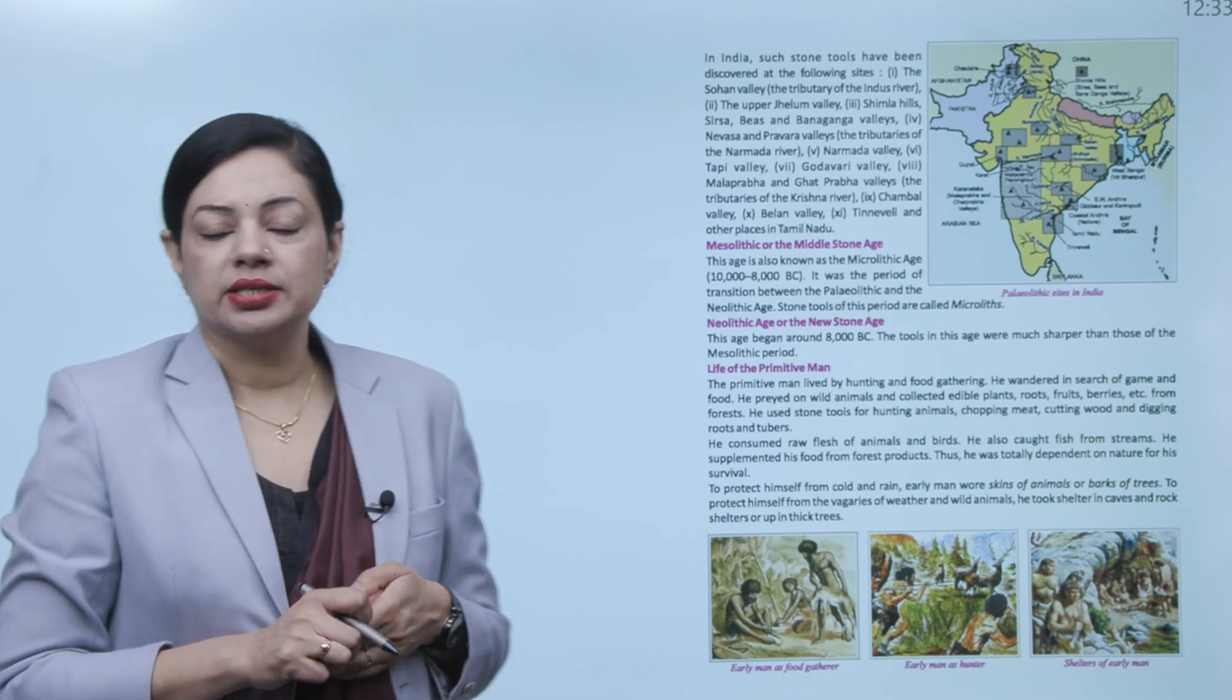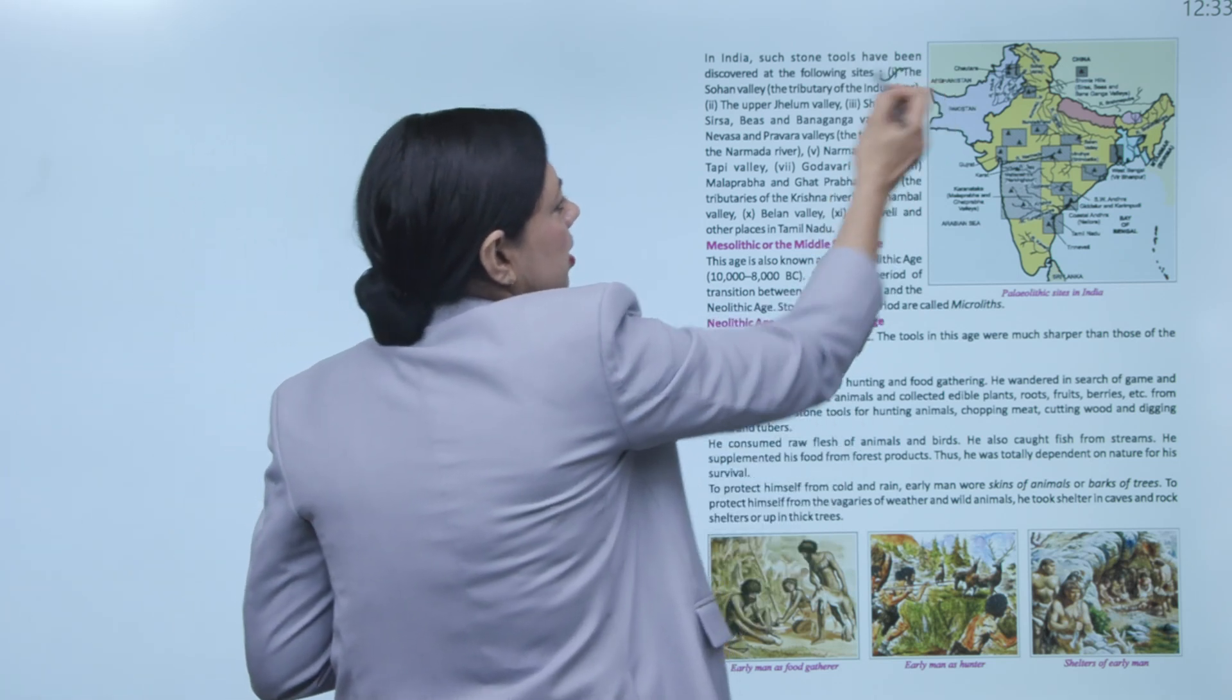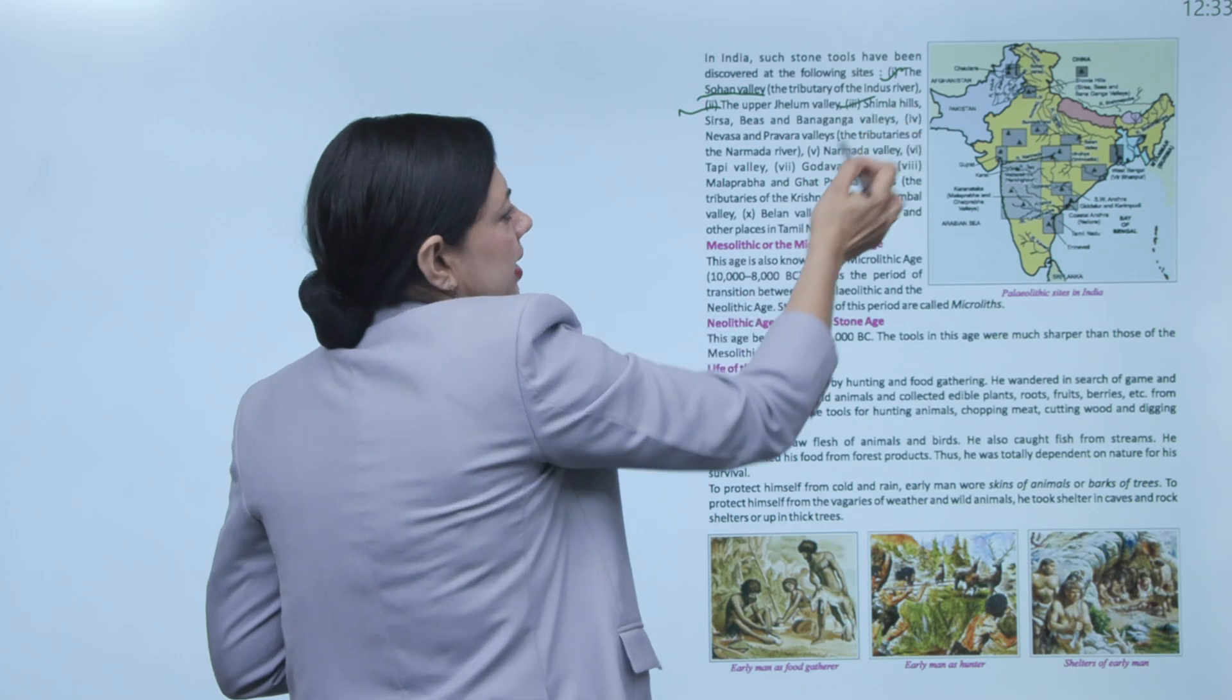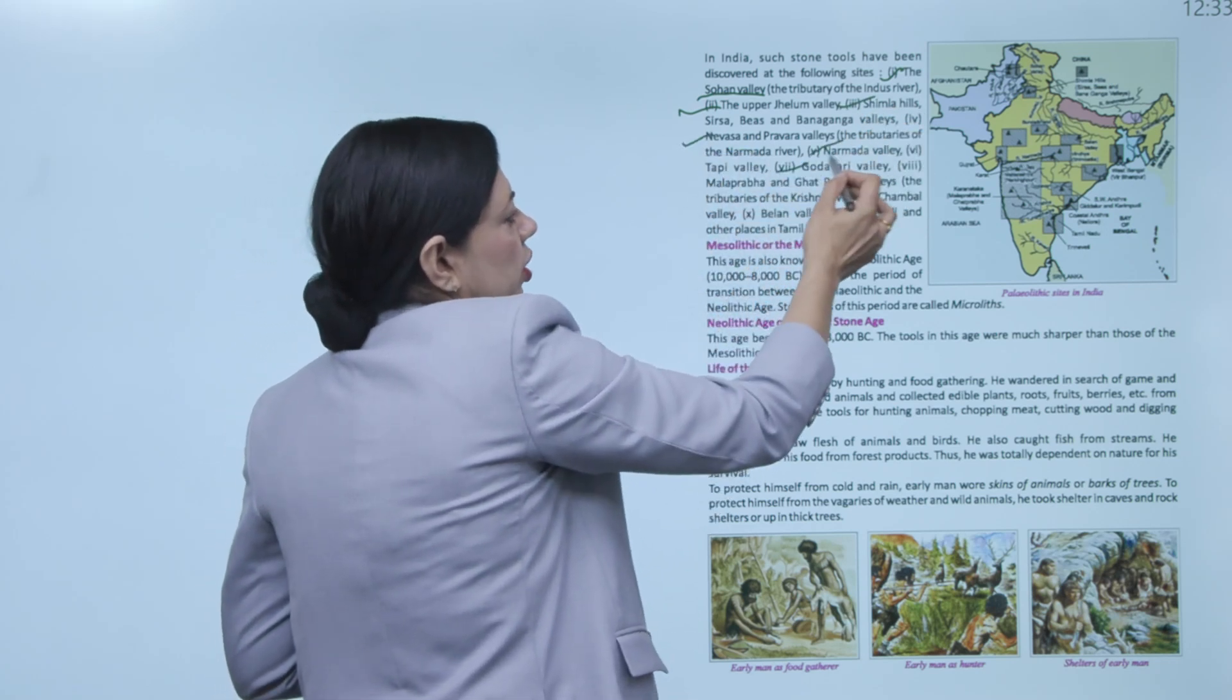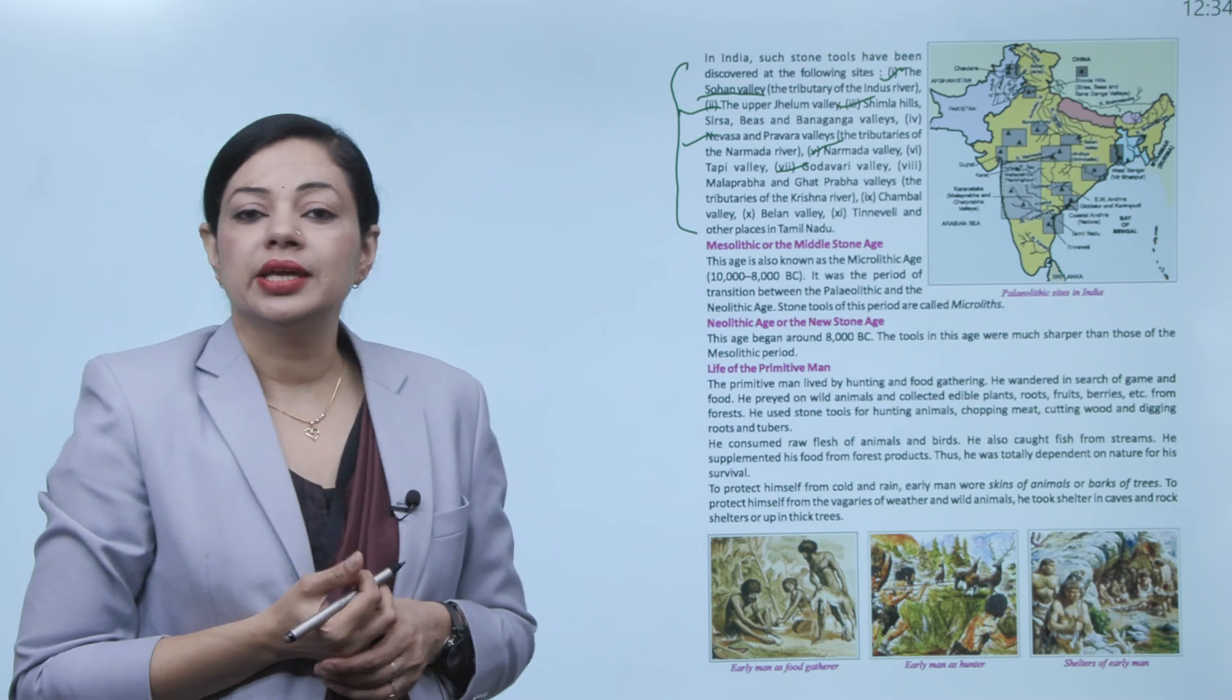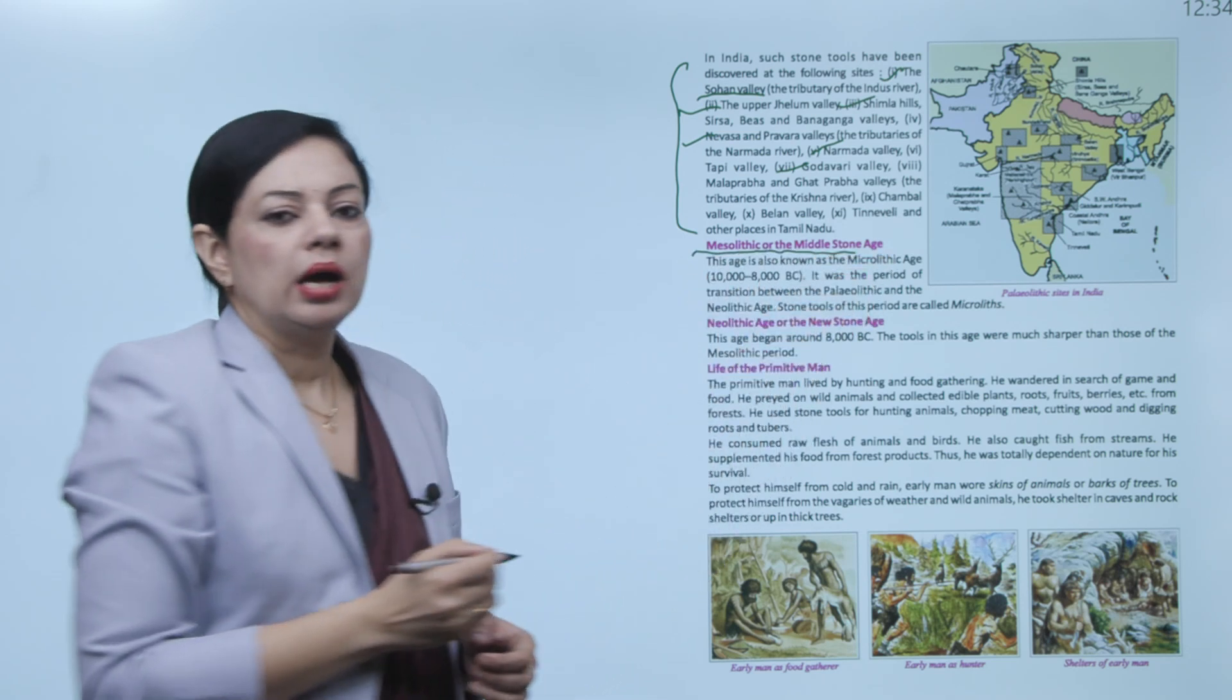At this time in the Paleolithic or Old Stone Age, human beings didn't have much knowledge, so what they did was use stones as tools. In India such stone tools have been discovered at the following sites. How do we know about these Paleolithic sites? Because we found such tools at places like the Soan Valley, that is the tributary of Indus River, near it Upper Jhelum Valley, Shimla Hills, Nevasa and Pravara Valley, Narmada Valley, Godavari Valley.